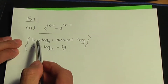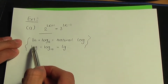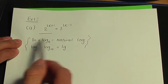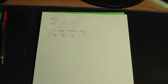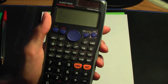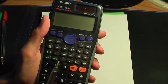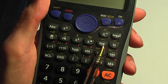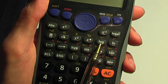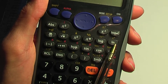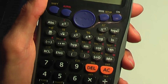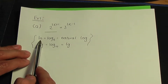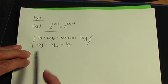The reason I'm focusing on ln or log is purely because on your calculator you have functions for both. Log on the calculator means log to the base 10, and ln means log to the base e. I'm going to take natural logs on both sides, so I'm going to use ln.